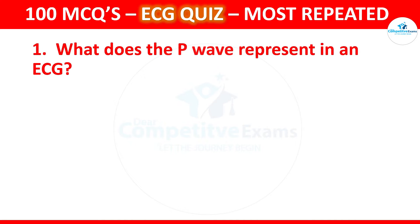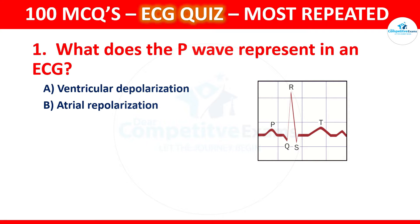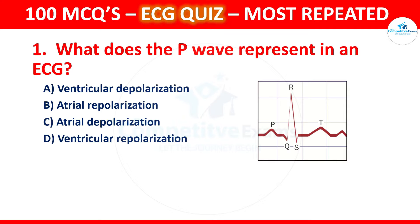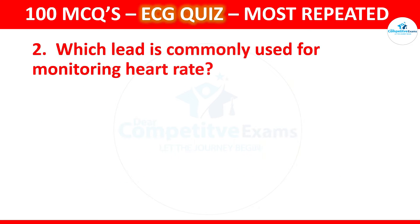Question 1: What does the P wave represent in an ECG? Options are ventricular depolarization, atrial repolarization, atrial depolarization, or ventricular repolarization. The correct answer is atrial depolarization. The P wave signifies the atrial depolarization that reflects the electrical activation of the atria.